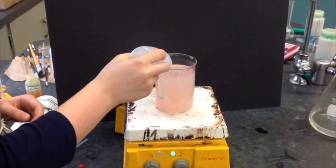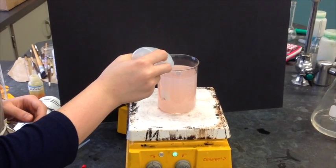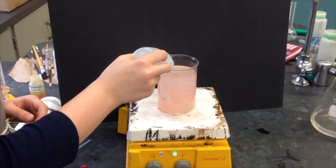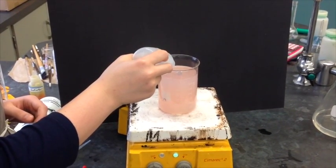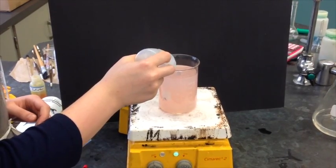Keep in mind though, this is just an estimate of the isoelectric point for casein because it's really hard to get an exact estimate since it's hard to tell exactly where the most cloudiness is during the reaction.